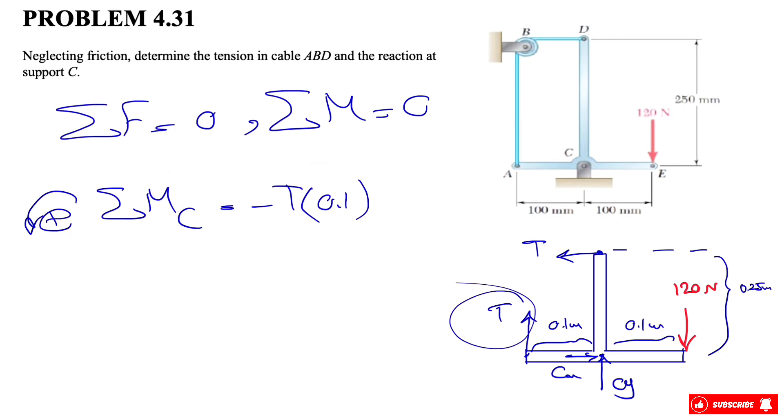For the tension at point D, that's a counterclockwise moment which means positive, so counterclockwise positive. The distance is 250 millimeters or 0.25 meters.